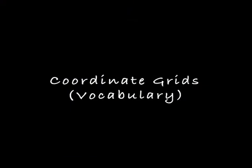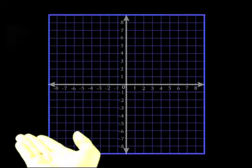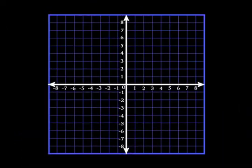Today we are talking about coordinate grids. This is a coordinate grid. It has two number lines that cross each other at 90 degrees or right angles.